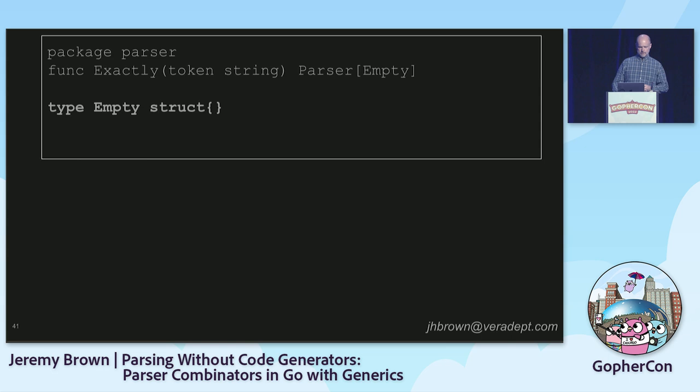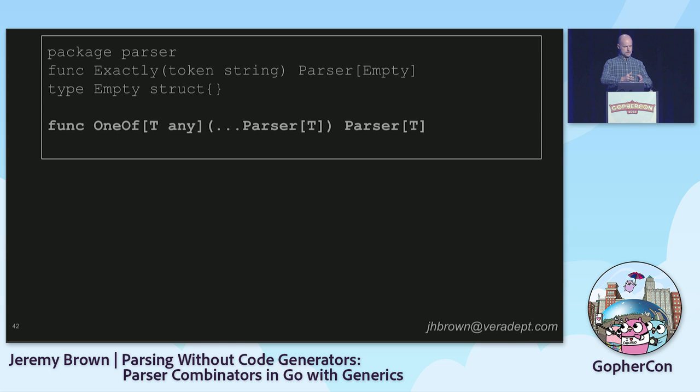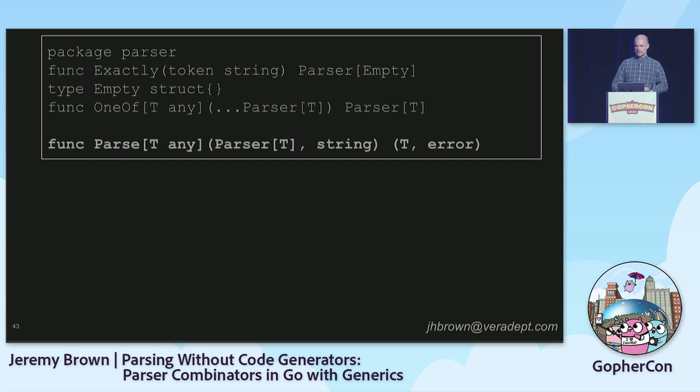For the first time, let's look a little bit inside the parser package at some type signatures. Our first function is `exactly` — it's a function that takes a string and returns a parser. This parser is generic, specialized on `empty`. `empty` is just a wrapper on an empty struct — it's a marker, so it's a little short on Boolean information. And `oneOf` is a parameterized function — it takes an arbitrary number of parsers producing the same type and produces one parser producing the same type. So the true parser is empty, the false parser is empty, and the Boolean parser is also going to be empty.